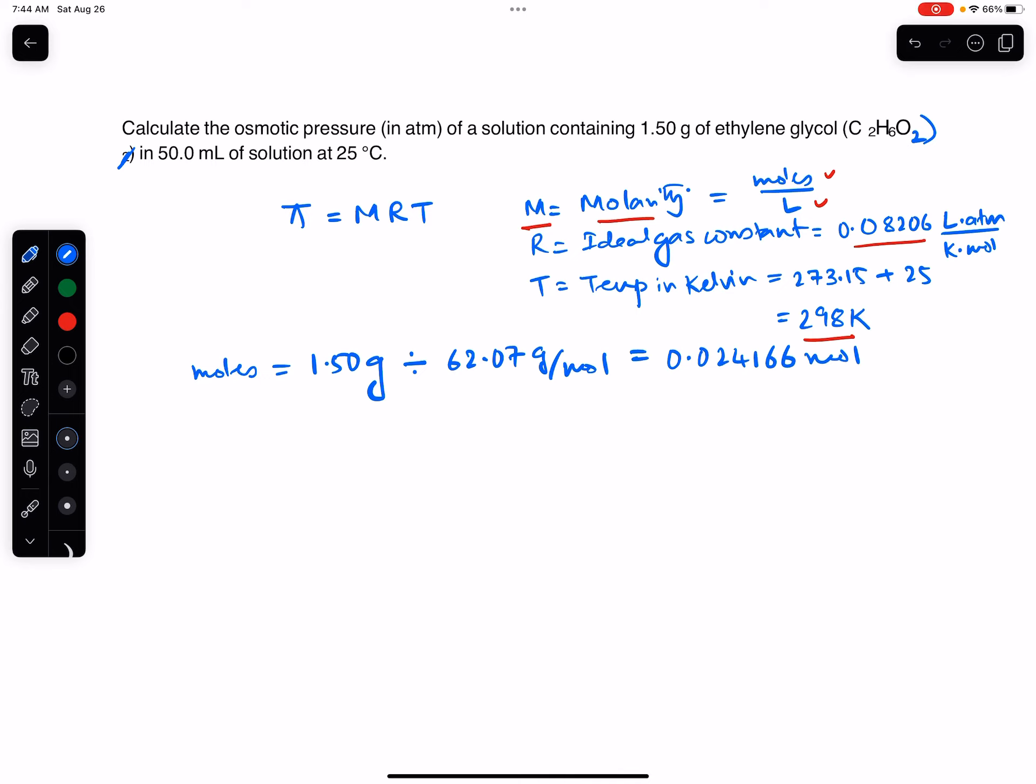And for the volume in liters, a good quick way to convert any time you have milliliters - let me just show you a quick trick to convert milliliters to liters. You just write the milliliters and then you basically take the decimal and move it three places to the left. And there you have it in liters. So that gives you 0.050 liters.